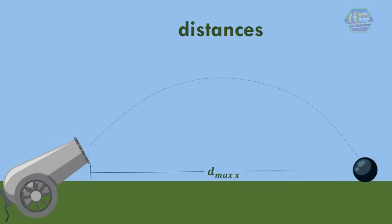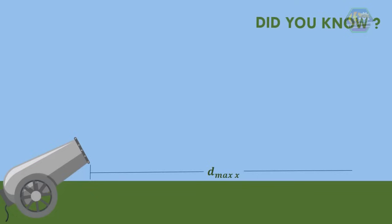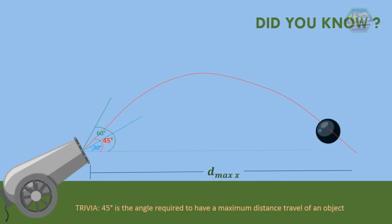Before we end, let me leave you with this trivia. Did you know that in projectile motion, to have a maximum distance travel of an object, it should be fired at 45 degree angle? That is all for now. I hope you learned something today. Once again, this is Easy Engineering.